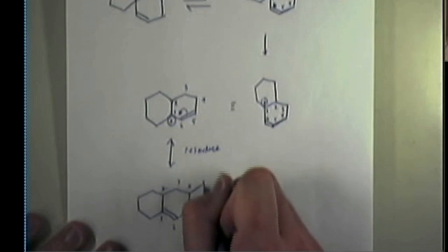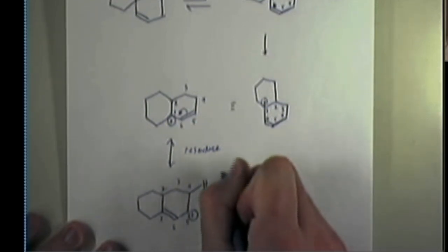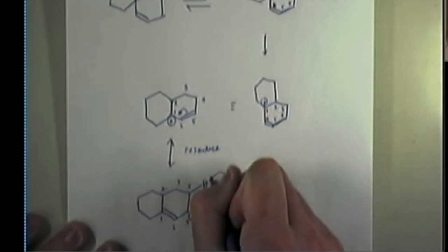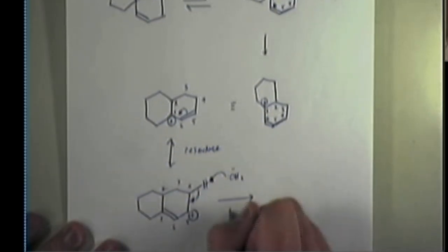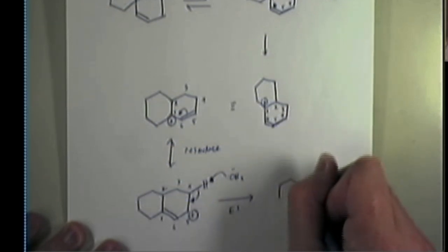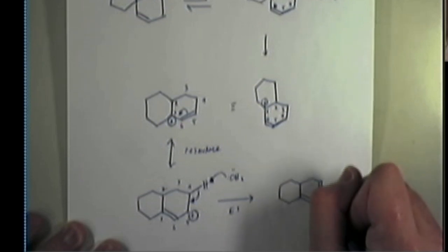So going to the end, all I have to do is realize that if I take a molecule of water and use it as a base, it strips that proton, pumps these electrons in here. And this is an E1 reaction. And it gives me my final product. It's got a double bond there and a double bond right there. And that is it.